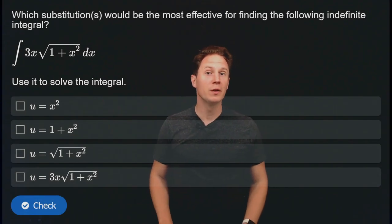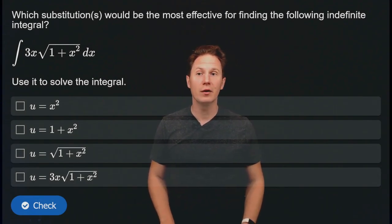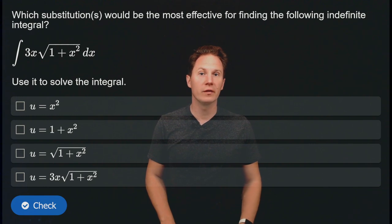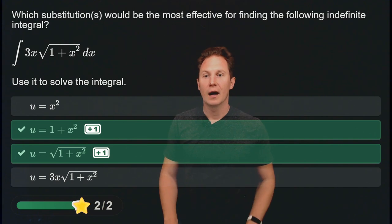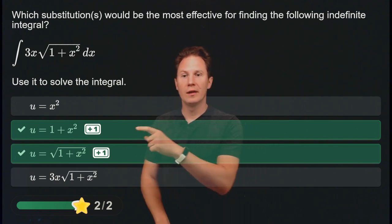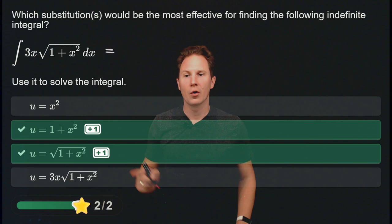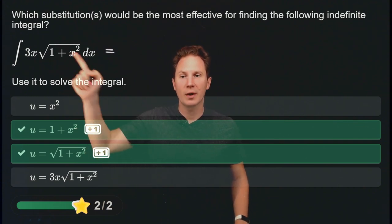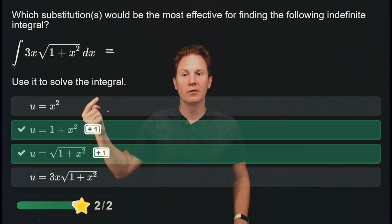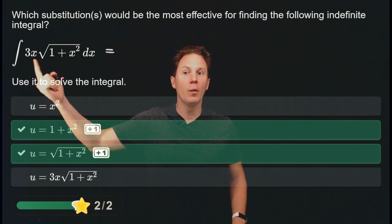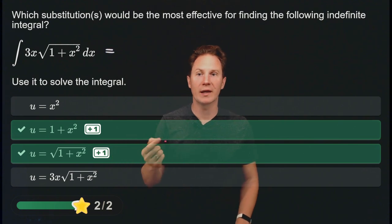Which substitution would be most effective for finding the indefinite integral of 3x · √(1 + x²) dx? Select your substitution and then use it to solve the integral. A good choice is u = 1 + x², because the expression under the square root is useful to call u since its derivative is 2x, which is close to what we have in front of the square root.